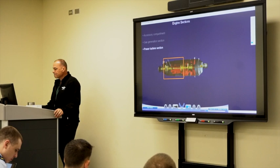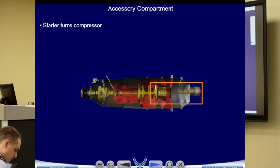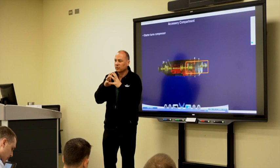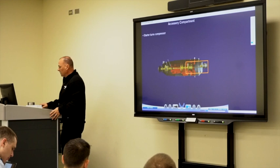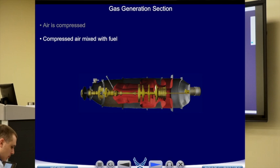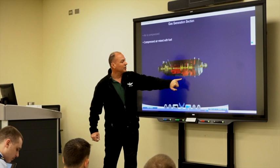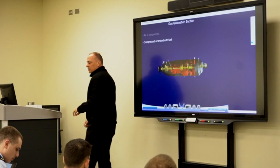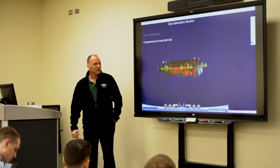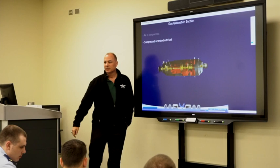How does it work? Initially the starter turns the compressor. Notice these stator blades keep working the air tighter and tighter — this is the compression section. The blades get smaller as air matriculates through the engine. Once the gas is compressed, it goes into the combustion section. Air is compressed, then mixed with fuel, and the igniters ignite the fuel — that's where combustion happens. When it combusts, that air flows back through and turns the compressor section and the power turbines.